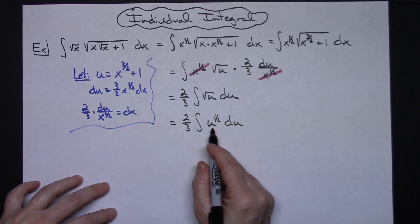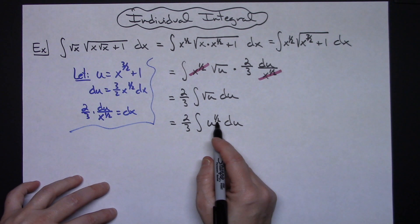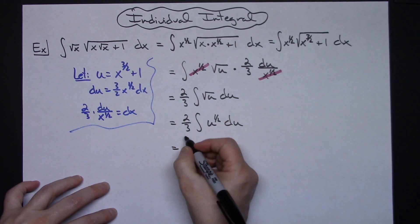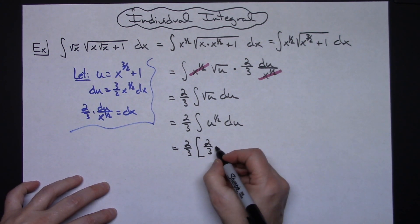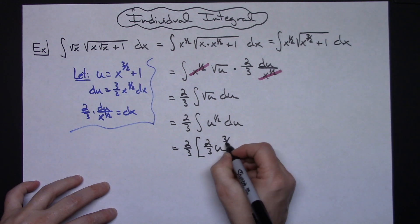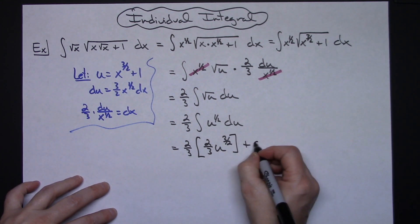So when I integrate there adding 1 I'll have a 3 halves and I'll put that 2 thirds out in front. So this 2 thirds stays there. This 2 thirds is from the integration and then u to the 3 halves and then plus c.